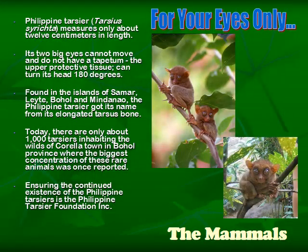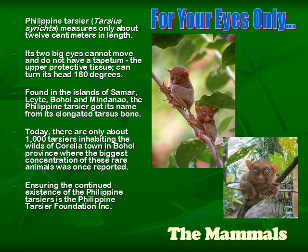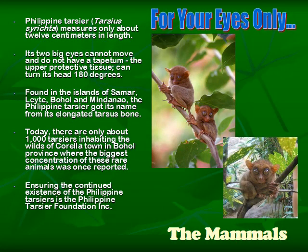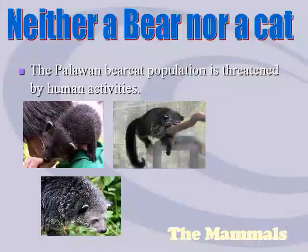Then we have the Tarsier — the Philippine Tarsier or Tarsius syrichta. These are very small cute organisms found in the islands of Samar, Leyte, Bohol, and Mindanao. They look like rodents. They cannot close their eyes because they don't have an upper eyelid, and they can turn their head 160 degrees.